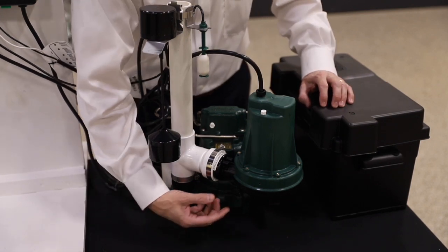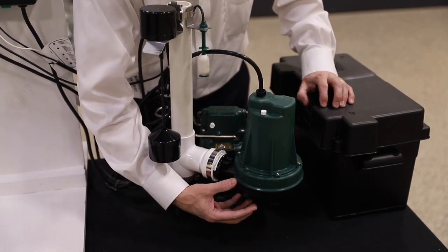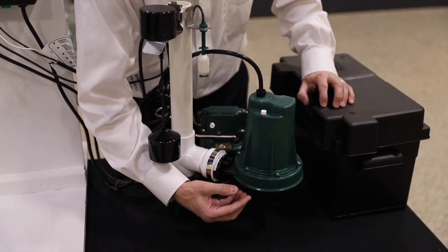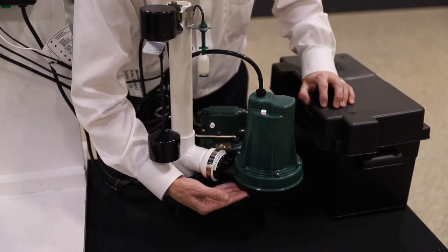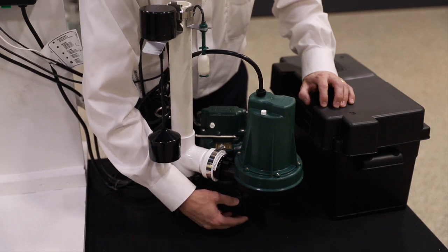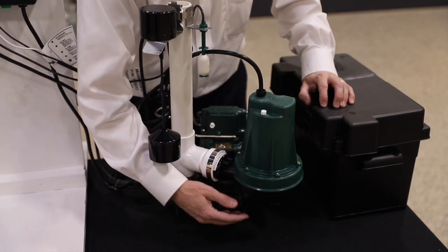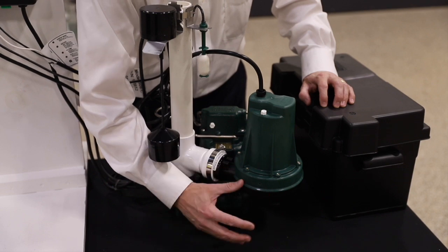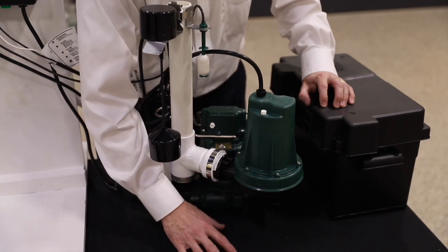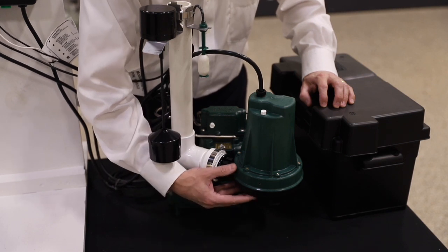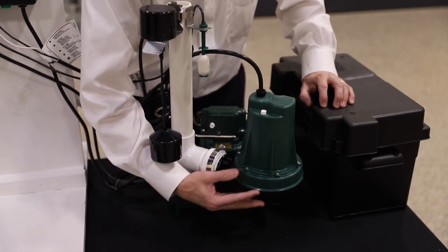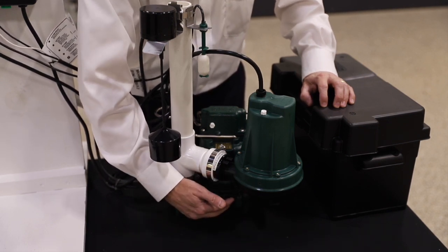The other thing that's very important is to make sure that the intake of the DC pump, which is in this area here, is higher up than the primary pump. So sometimes you may put this on the floor of the pit instead of a T configuration like that. And if that's the case, you just want to make sure that the DC pump isn't lower than the AC pumps intake.